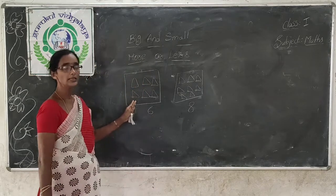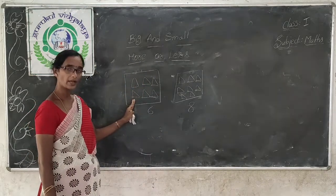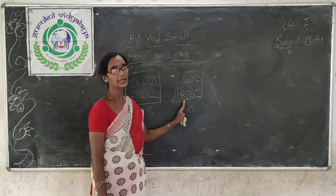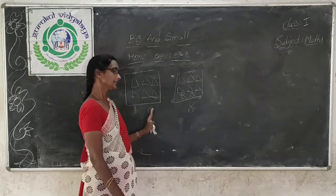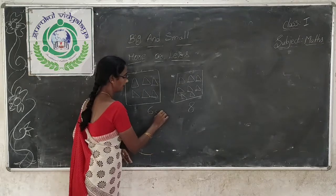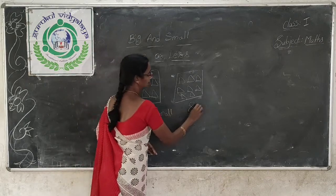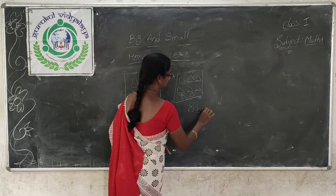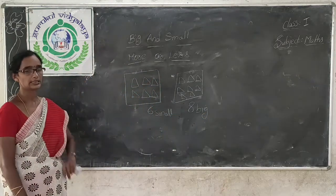So 6 is the small number and 8 is the big number. This group has small number of triangles and this group has big number of triangles. 6 is the small number and 8 is the big number.